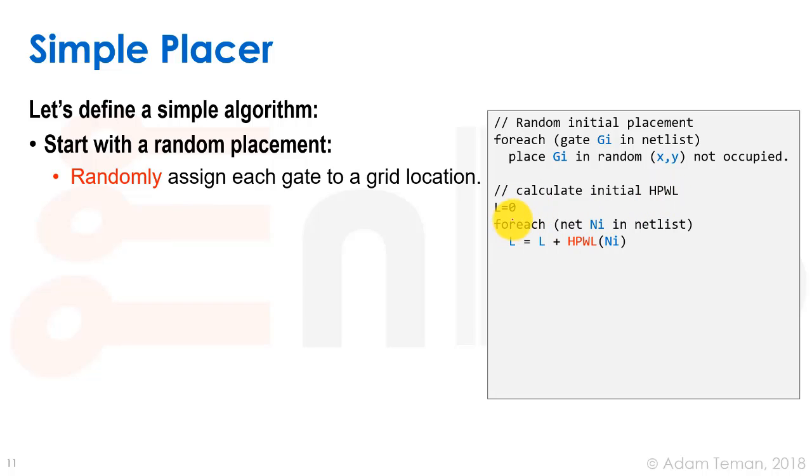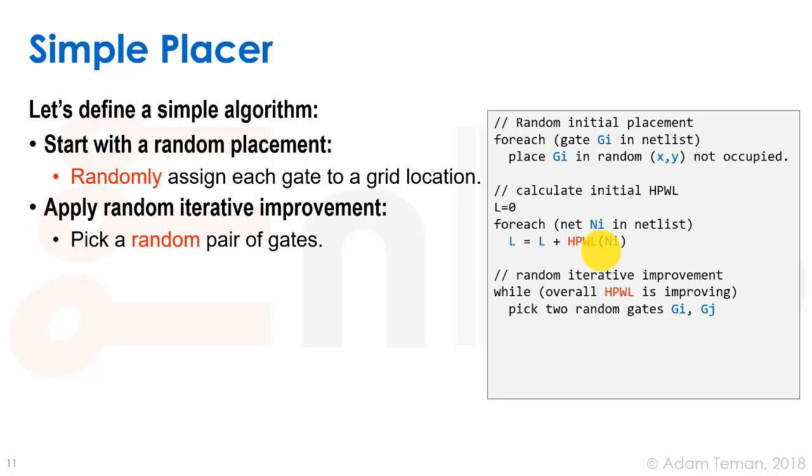Then what we're going to do is calculate the half perimeter wire length. We're going to start at zero, then go over every single net in the netlist, and add to our total wire length the half perimeter wire length of that net.